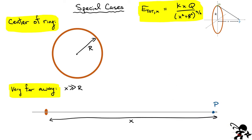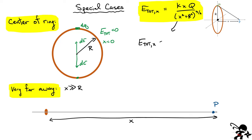Now how do you know the result is correct? Whenever I get a complicated-looking result, I suggest taking a couple of limits to make sure it satisfies the physics. Let's consider the center of the ring, where X equals zero. At the center, every charge on one side has an equal charge opposite from it producing a field of the same magnitude, so they should cancel and the total electric field should equal zero. When X equals zero in our expression, we get KQ multiplied by zero divided by R squared to the three-halves, which gives zero. That checks out.